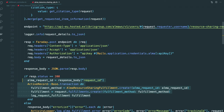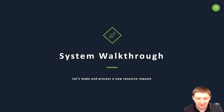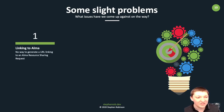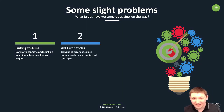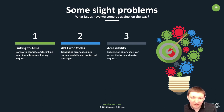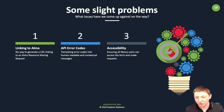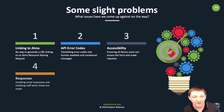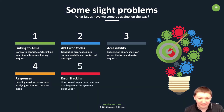If we get a success code we let the user know; otherwise we log each error. This highlights a few current issues. First, there's no easy way to generate a deep link URL from our back-end to the resource sharing request in Alma. Second, Alma API error codes need to be translated from Alma-specific language into something meaningful for library staff and accessible for all users. Third, we need to handle email responses and notify staff when requests are made. Fourth, error tracking — if the Alma API returns errors, we need visibility into what's happening.